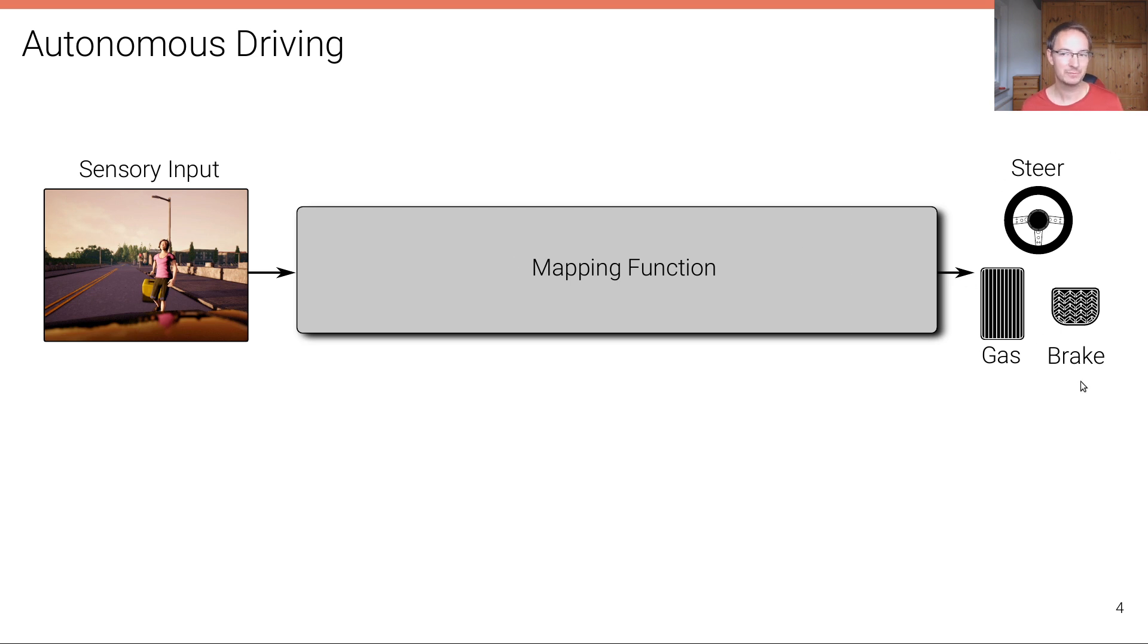It takes this high-dimensional input and produces a low-dimensional output, basically just two-dimensional, which is the steering command, left or right, and the longitudinal control, which is giving gas or braking. The goal is to find a mapping function that does this mapping from this high-dimensional input space to this low-dimensional output space very robustly and reliably.